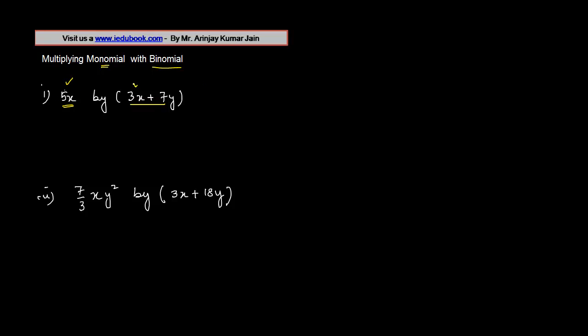If you notice, we have one which is 5x, the other one is 3x and 7y. Now if I were to write these as something like a is equal to 5x, b is equal to 3x, and c is equal to 7y.